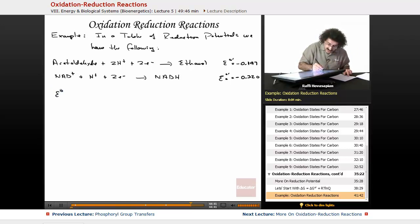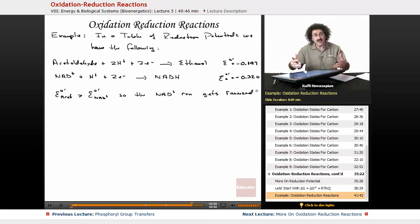The E of the acetaldehyde is greater than the E standard of the NAD plus, so the NAD plus reaction gets reversed. Always. That's what we do. Under spontaneous conditions, these numbers tell us that's what happens. It gets reversed.